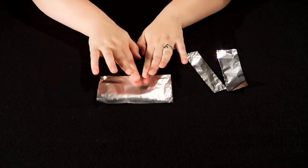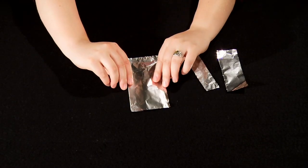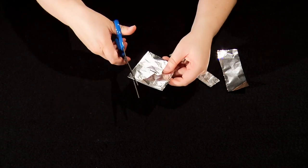Next we will construct the other end of the spectroscope. Take the other aluminum foil square and cut a hole in the center of it in the same way as before.